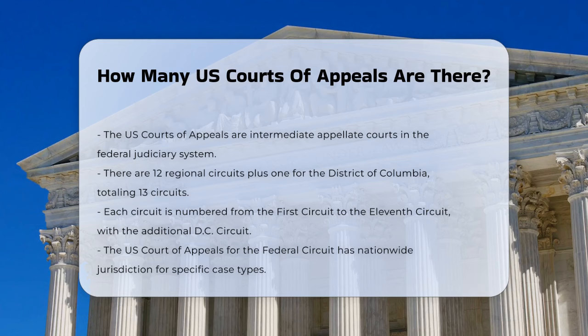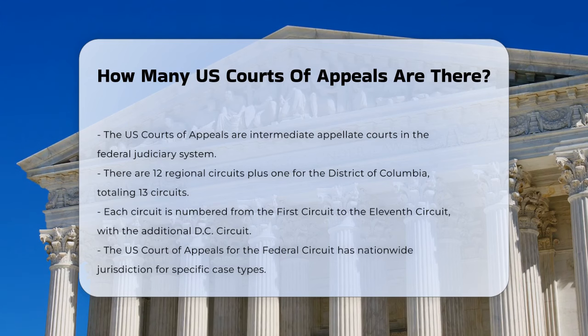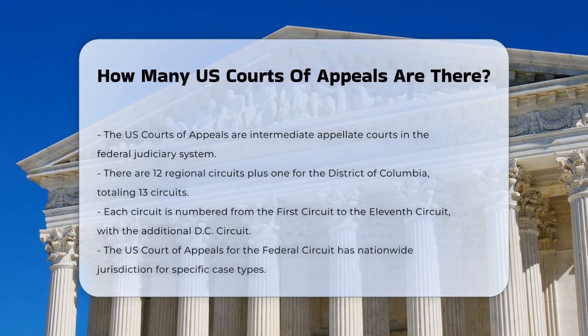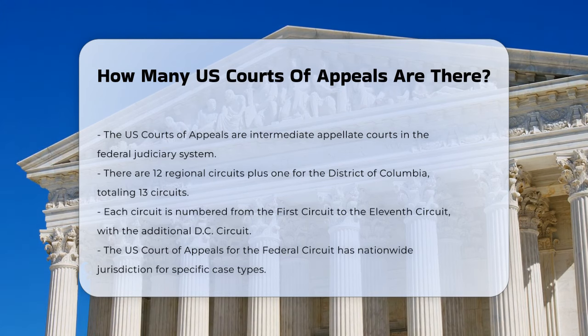There are 12 regional circuits, each named by number from the First Circuit to the Eleventh Circuit, and one additional circuit specifically for the District of Columbia.